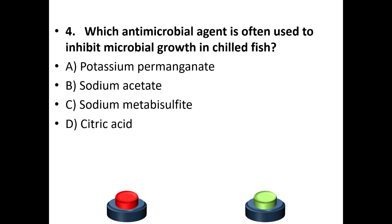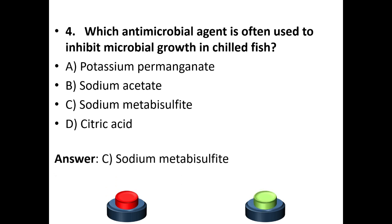Fourth question: Which antimicrobial agent is often used to inhibit microbial growth in chilled fish? Options: potassium permanganate, sodium acetate, sodium metabisulphite, citric acid. The answer is option C — sodium metabisulphite.